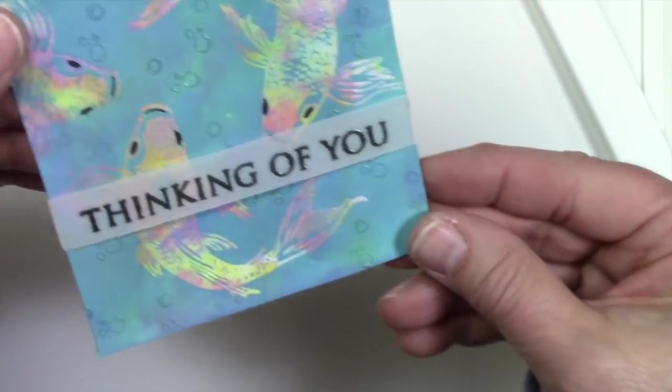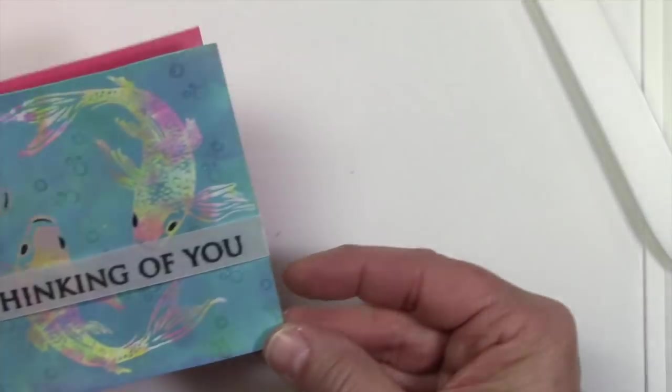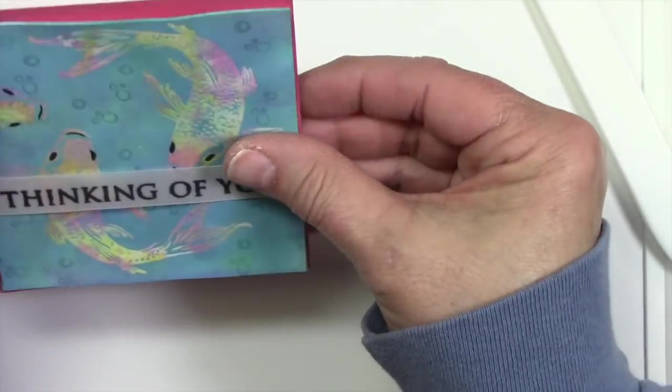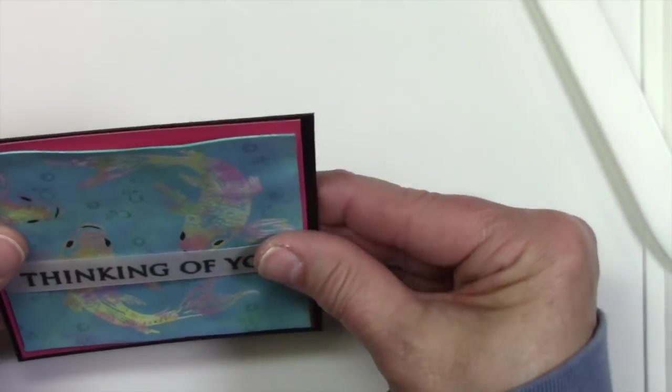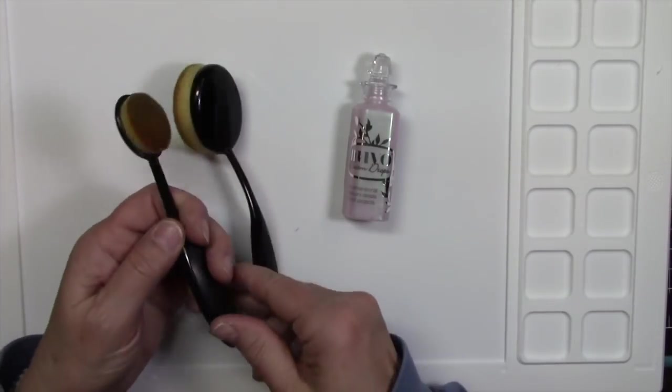And I cover up the blank spot on that fish. Since this stamp was part of a set of stamps, it doesn't have all the features. So I kind of covered the part up that was showing.